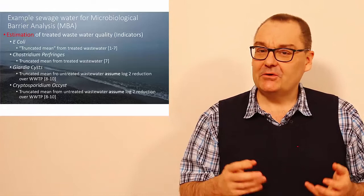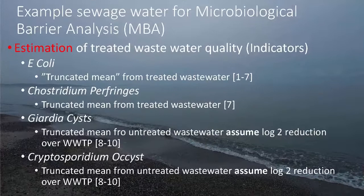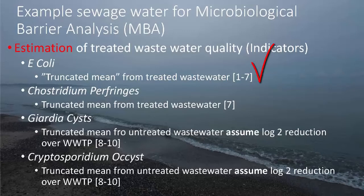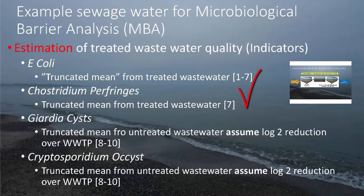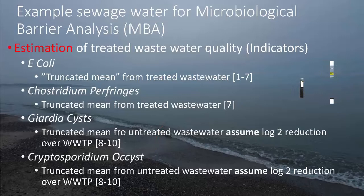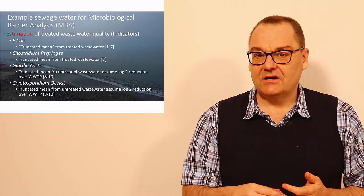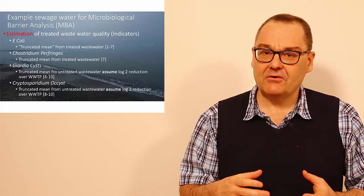The results of the literature study based on some indicator parameters are the following. E. coli, I have used references 1 through 7 to estimate a mean value in the outgoing water from the wastewater works I just showed you. For Clostridium perfringens, I have used reference 7 to get the mean value in the outgoing water. And for Giardia and Cryptosporidium, I have used references 8 to 10 to come up with a log 2 reduction over the wastewater treatment plant. With this, let's have a short summary of the count of the bacteria, viruses, and parasites that we're now going to use to make the MBA.